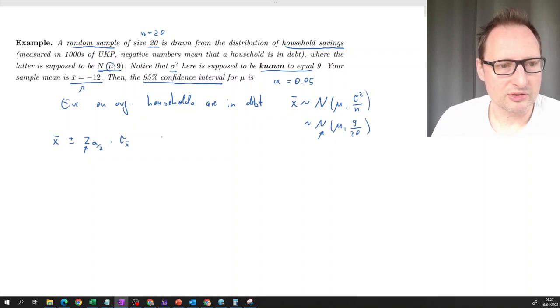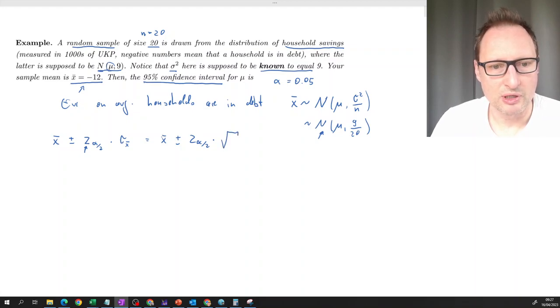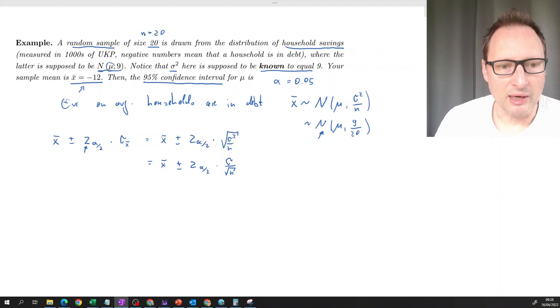And that is, of course, so that is X bar plus minus z alpha half times the variance, the square root of the variance. So that will be the square root of sigma squared over N. Or let's write it yet an alternative form, which you may see plus minus z alpha over 2 times sigma divided by square root N.